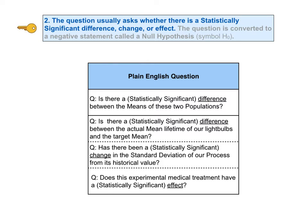The question we are asking can usually be stated as: is there a difference, change, or effect? And statistically significant is implied. The hypothesis will tell us whether any observed difference, change, or effect is statistically significant. The question is about a numerical statistical property, such as the mean or the standard deviation. For example: is there a difference between the means of these two populations? Or, has there been a change in the standard deviation of our process from its historical value?